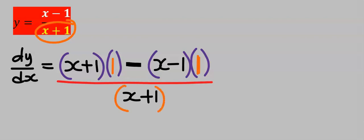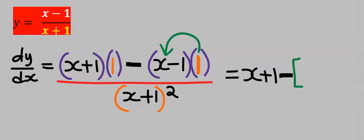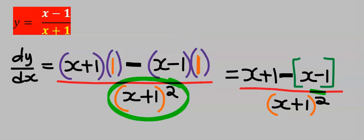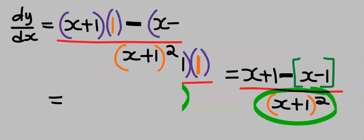Next, 1 multiply by X and you're going to get X. Next, 1 multiply by 1 and you're going to get 1. Next we have a minus: 1 multiply by X and we have X. Next, 1 multiply by minus 1 and we're going to get minus 1. The denominator remains the same.